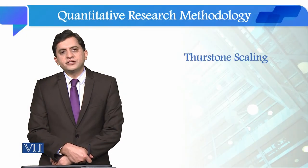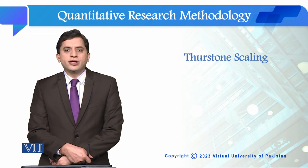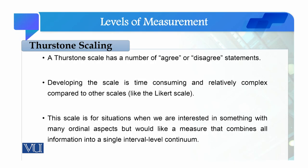Students, we discussed Likert scale in the last module and now we are going to discuss Thurston scaling. Thurston scaling is a kind of scaling in which we actually see the statements with the intent of agreement and disagreement. Developing the scale is time consuming and relatively complex compared to other scales. If we compare it with Likert scale, this scale is a little complex.